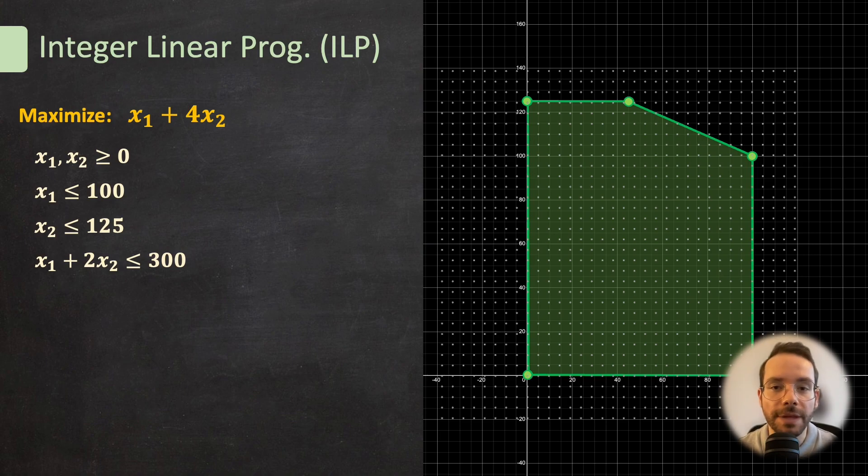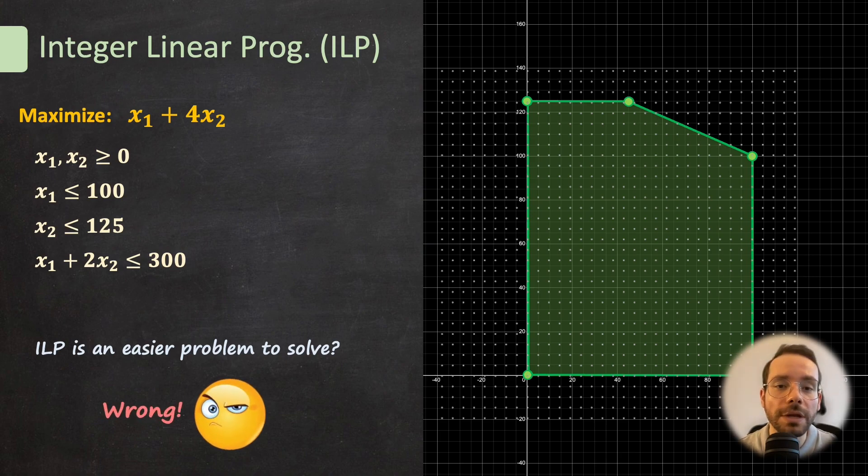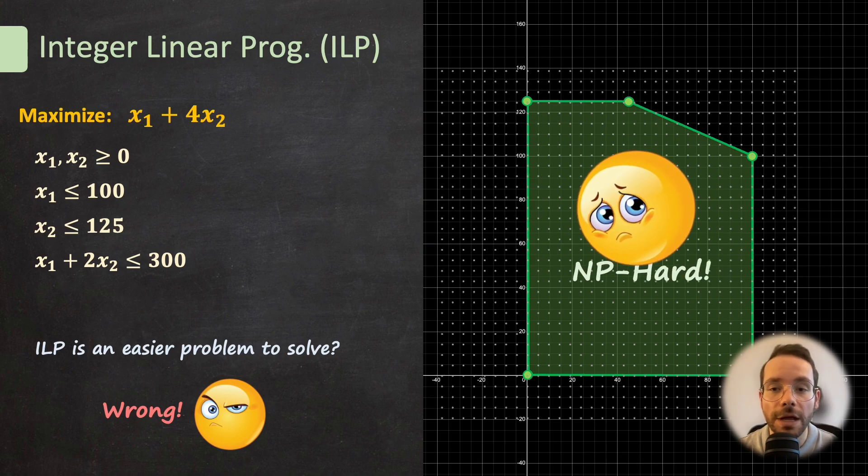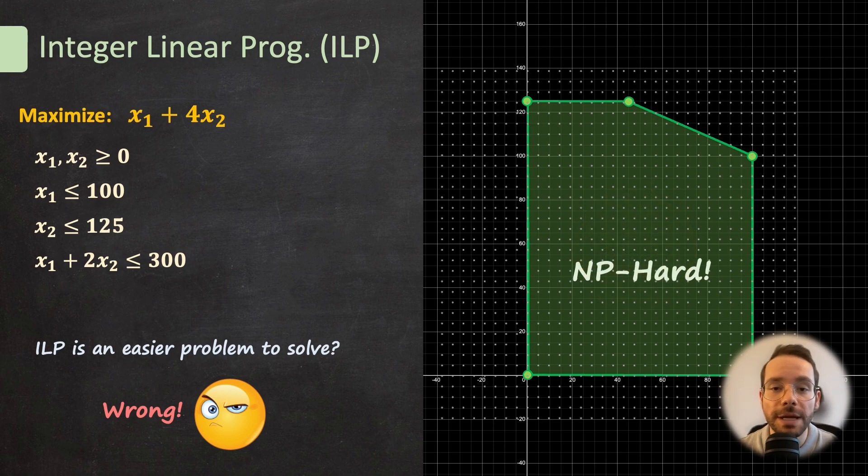Now, the question is, is integer LP any easier to solve? While it might seem so, in reality, it introduces a whole new layer of complexity. While the objective function and the constraints in ILP are still linear, the requirement that the decision variables are integers significantly impacts the difficulty of finding the optimal solution. Integer linear programming problems fall into the category of NP-hard problems. In simpler terms, this means that in the worst-case scenario, finding the optimal solution may require exponential time.